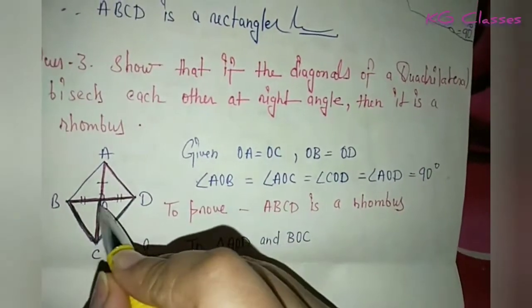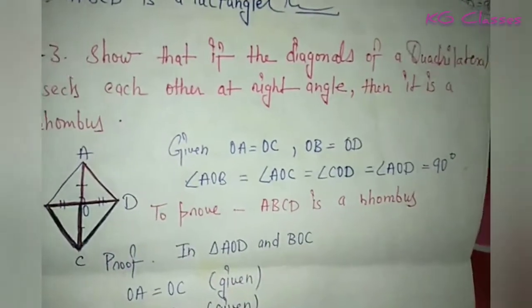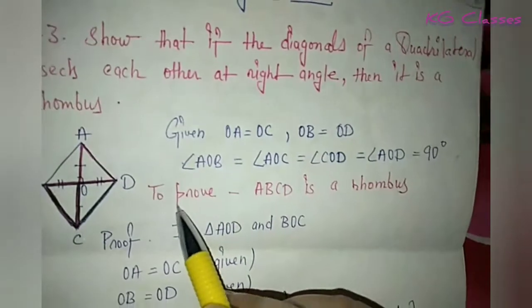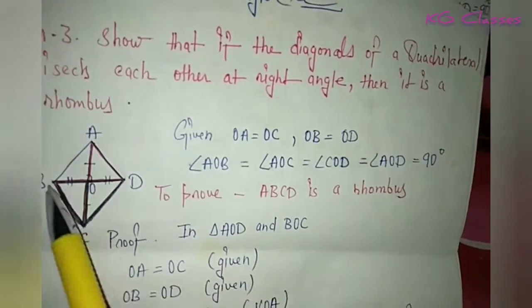So we have to prove that the diagonals of quadrilateral ABCD bisect each other at right angles — that is, 90 degrees — and we have to prove that ABCD is a rhombus.